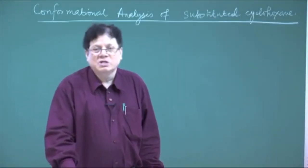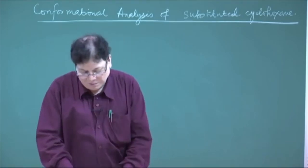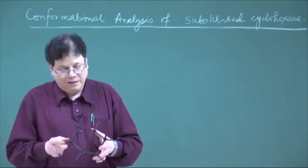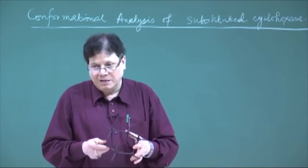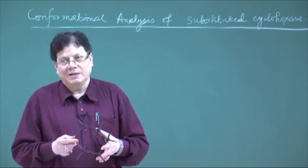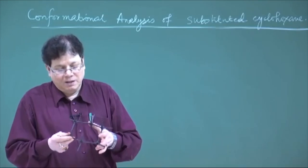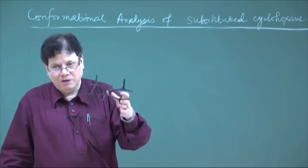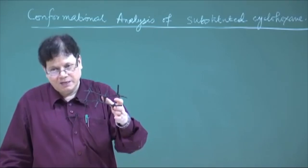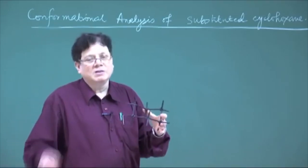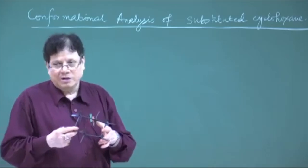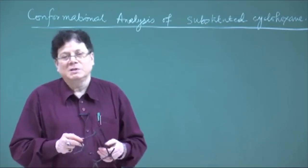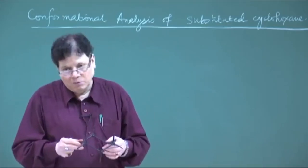Welcome back. Last time we did the analysis of flipping — how the energy changes — and we identified the conformers present in cyclohexane. There are basically two conformers: the chair form and the twist-boat form. The boat form lies at an energy maximum, so it is not a conformer. The boat form is unstable mainly because of the presence of two eclipsed units in it.